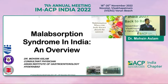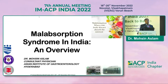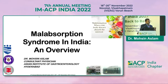We usually treat them with PPIs and prokinetic agents. Before two decades, the infectious causes were very common for malabsorption syndrome, but due to improvement in sanitation and standard of living, the infectious diseases are coming down, and other causes like autoimmune conditions such as celiac disease and inflammatory bowel disease are increasing, which are responsible for malabsorption syndrome in India.